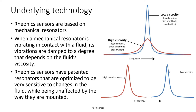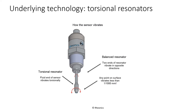Rhionics sensors have patented resonators that are optimized to be very sensitive to changes in the fluid, while being unaffected by the way they are mounted. The SRV, SRD, and DVP all use resonators that vibrate in torsion. Torsional resonators are much better isolated from environmental influences than transverse resonators. Resonators that vibrate transversely, like a tuning fork, tend to be more influenced by how and where they are mounted. Rhionics torsional resonators do not rotate — they measure through microscopic vibrations that are influenced by the fluid's properties. The actual surface motion is less than one one-thousandth of a millimeter.